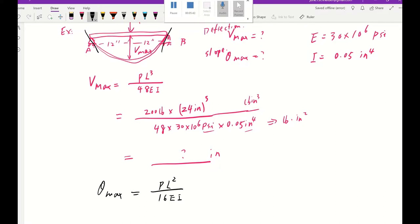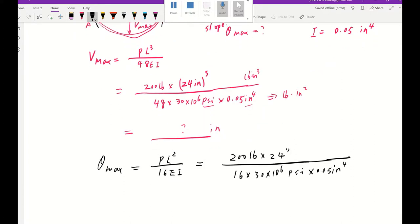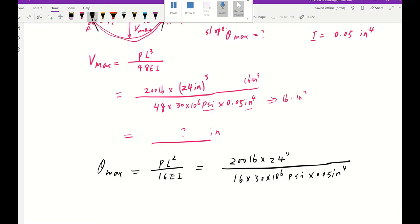That's going to be our slope. So put it in. Our concentrated load is 200 pounds and our L is 24 inches long. And 16. Our E is 30 mega psi and our I is 0.05 inch to the fourth. So thinking about the unit, the top one will give us a unit of pound inch square and the bottom one will give us pound inch square.